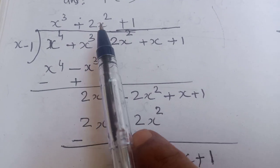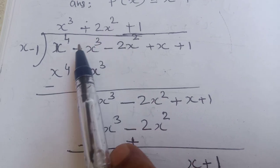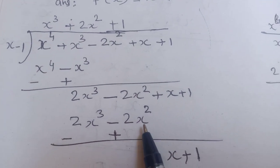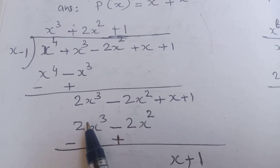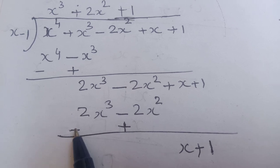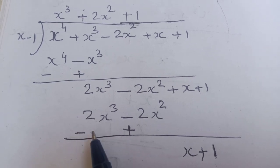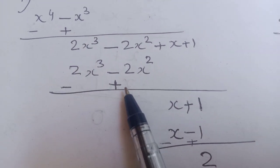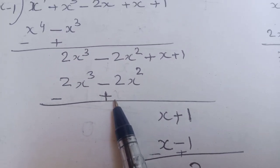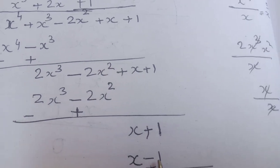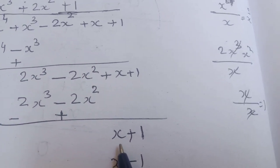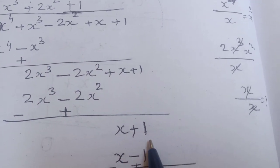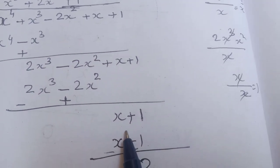So we have 2x³ and −2x². Change the sign — it becomes minus — so 2x³ cuts, and −2x² also cuts. The remaining terms are x + 1. Now divide the first term x by the first term of the divisor x, which equals 1.